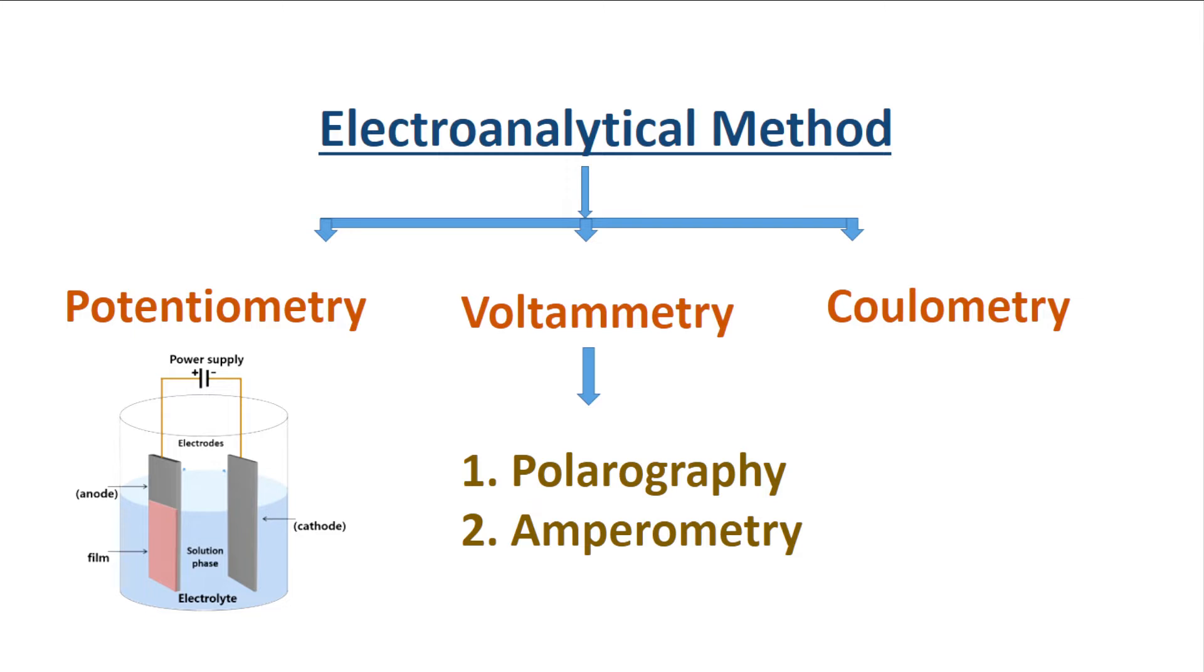The three major categories are potentiometry, voltammetry, and coulometry. In potentiometry, the difference in electrode potential is measured. In coulometry, the cell's current is measured over time, and in voltammetry, the cell's current is measured while actively altering the cell's potential. Polarography and amperometry come under the voltammetry category.